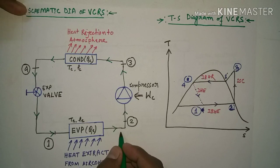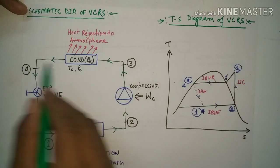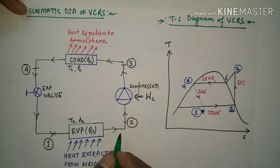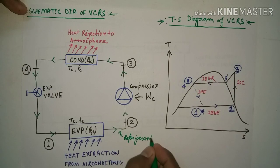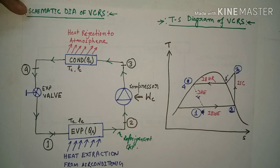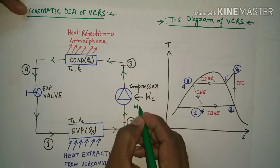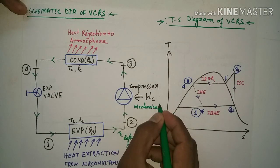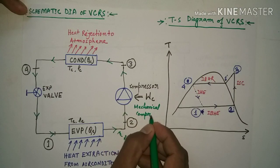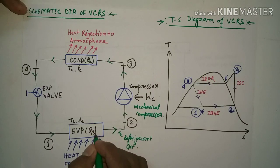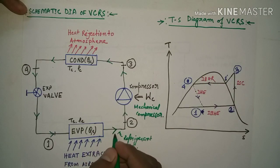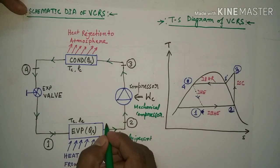In the VCRS, the refrigerant gas flows through this circuit — 1 to 2, 2 to 3, 3 to 4, and 4 to 1. This refrigerant circuit has the refrigerant gas mainly compressed by a mechanical compressor. When the refrigerant gas comes out from the evaporator, it is at low pressure and low temperature.